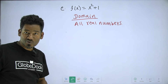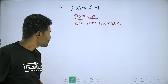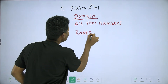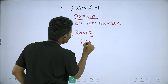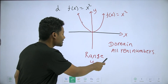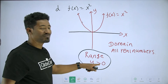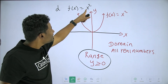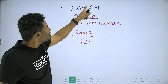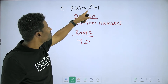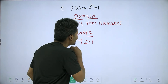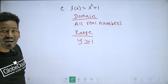The function output is always positive. So range: y is greater than or equal to — not zero, but if you see the minimum value when x equals zero, the output is zero plus one equals one. Range is greater than or equal to 1.